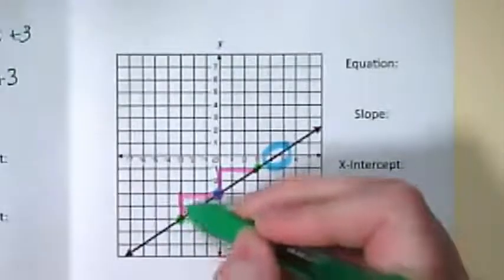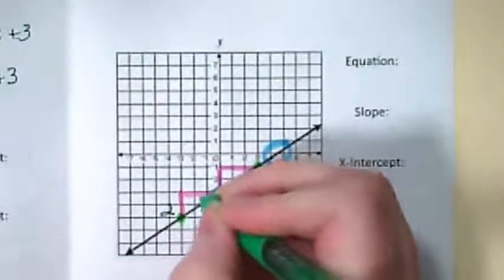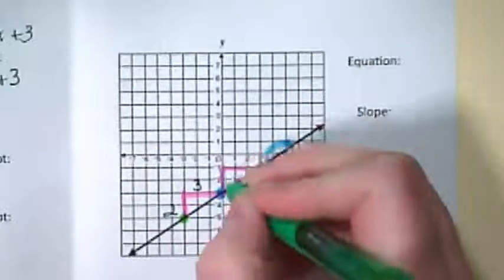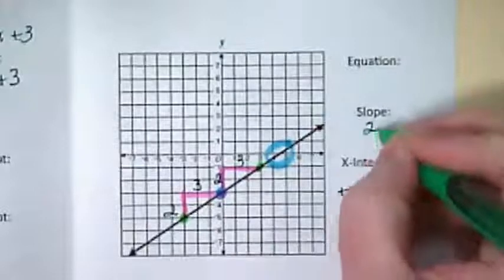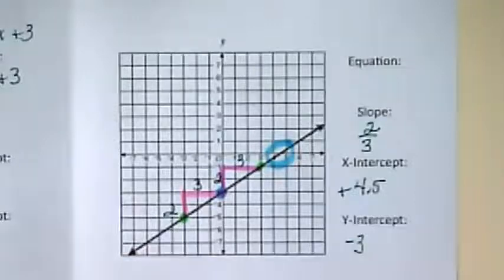How much is this rising up? How much is this running across? Is that the same with this one? So our slope is 2 over 3. Our line is positive.